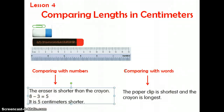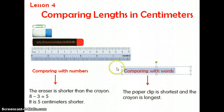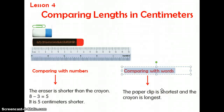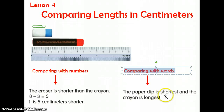There are two ways of comparing: one with numbers and the other one with words. When you're comparing with words, you use words like shortest, longest, taller, tallest. Here we have a sentence comparing the paper clip and the crayon. We would say the paper clip is shortest and the crayon is longest.